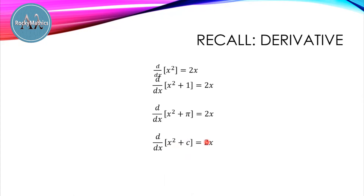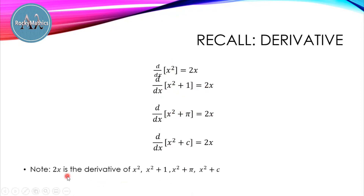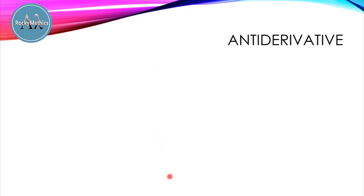What is interesting here is we want to know what x squared, x squared plus 1, x squared plus pi, and x squared plus c — for c any constant — whose derivative is 2x, what do we call these? Notice that 2x is the derivative of x squared, x squared plus 1, x squared plus pi, and x squared plus c. Before discussing this, we have the definition of antiderivative.